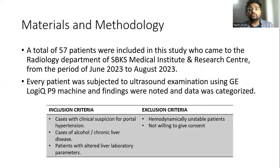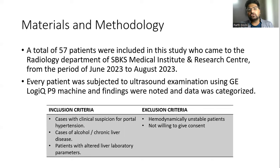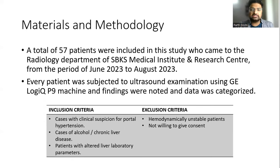A total of 57 patients were included in this study, presenting to the radiology department from June 2023 to August 2023. Every patient was examined using a GE Logiq P9 machine. Inclusion criteria included cases with clinical suspicion of portal hypertension, alcohol or chronic liver disease, and patients with altered liver laboratory parameters. Exclusion criteria were hemodynamically unstable patients and those not willing to give consent.